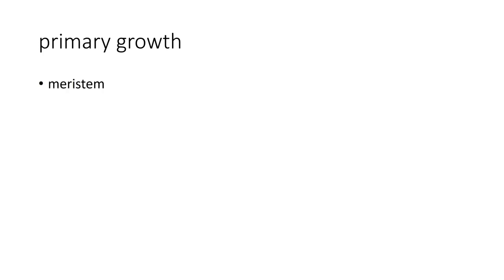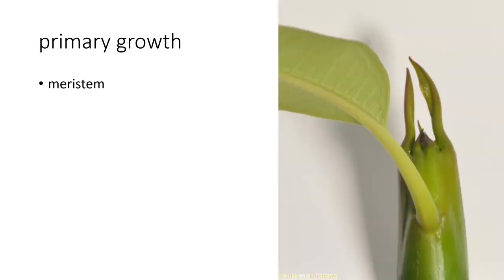Primary means the first — these are the first growths that occur. In primary growth we have what we call a meristem, and the meristem is a growing point on the plant.